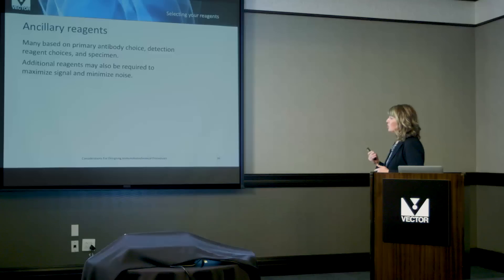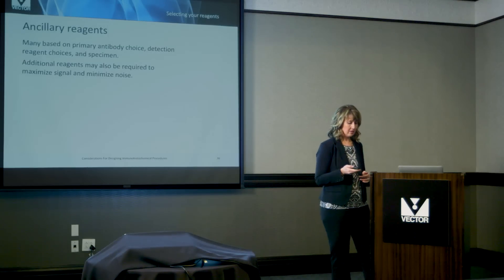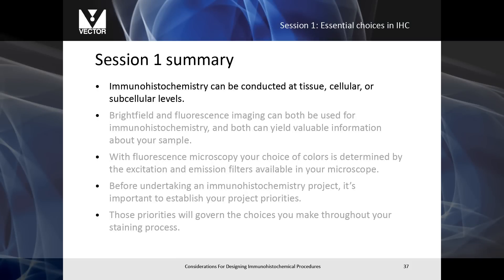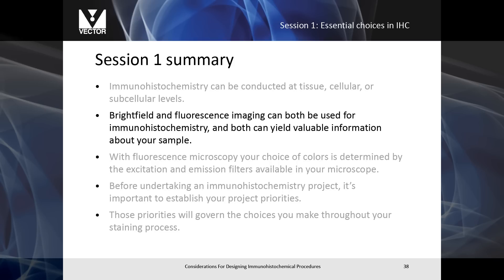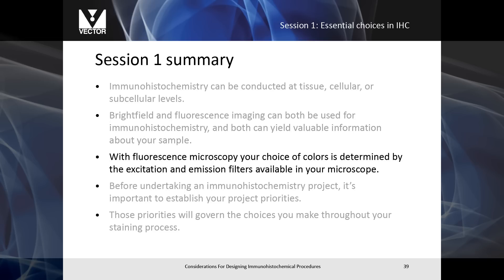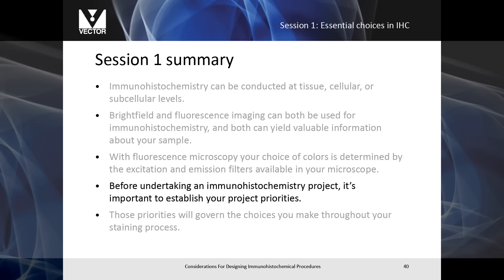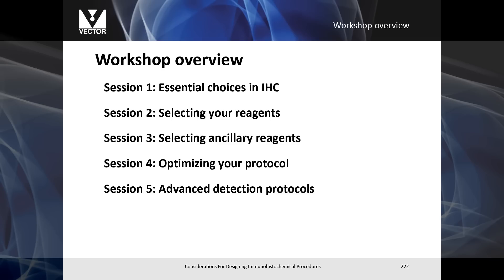Some ancillary reagents may also need to be added to maximize your signal and minimize your noise. In this section, we have covered several important topics. Immunohistochemistry can be conducted at tissue, cellular, or subcellular levels. Brightfield and fluorescence imaging can both be used for immunohistochemistry and both can yield valuable information about your sample. With fluorescence microscopy, your choice of colors is determined by the excitation and emission filters available in your microscope. Before undertaking an immunohistochemistry project, it's important to establish your project priorities. Those priorities will govern the choices you make throughout your staining process. Thank you for joining us for our seminar, and I invite you to listen to the additional sessions available on our website.